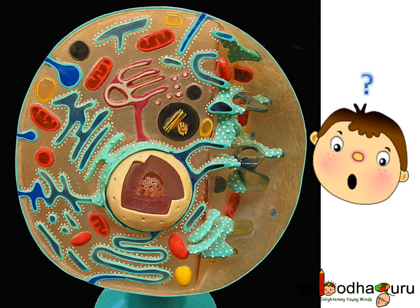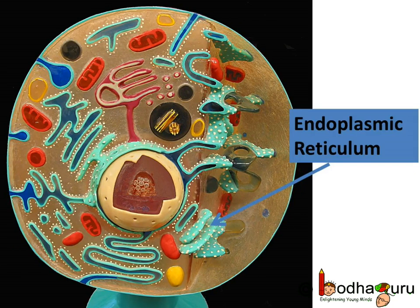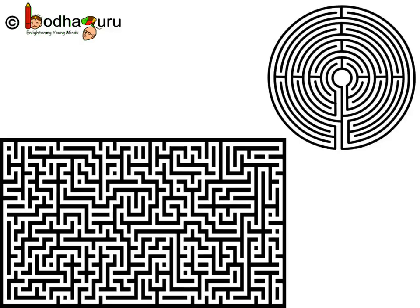But the question is, how does it do it? Let us get to know one awesome organelle which can produce protein, fat etc. It is endoplasmic reticulum. You must have played games which have a maze or labyrinth — endoplasmic reticulum kind of looks like that.